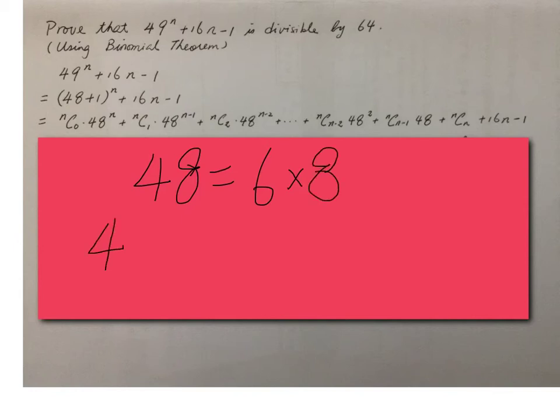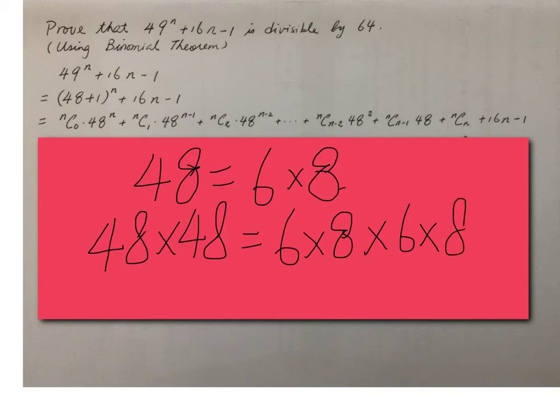Therefore, if I have 48 times 48, then it means I have 6 × 8 × 6 × 8. Now, look, actually it contains the factor 64.